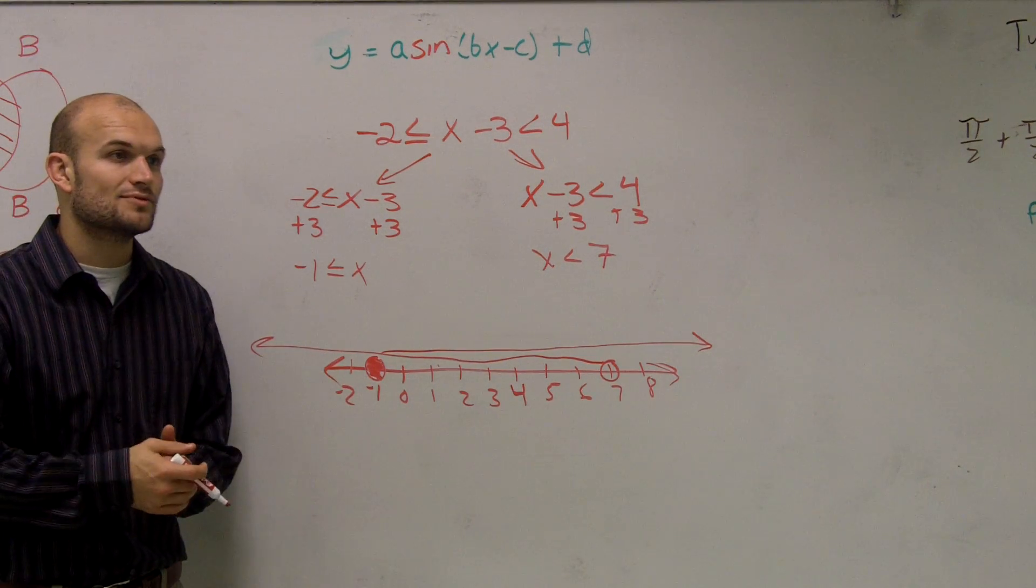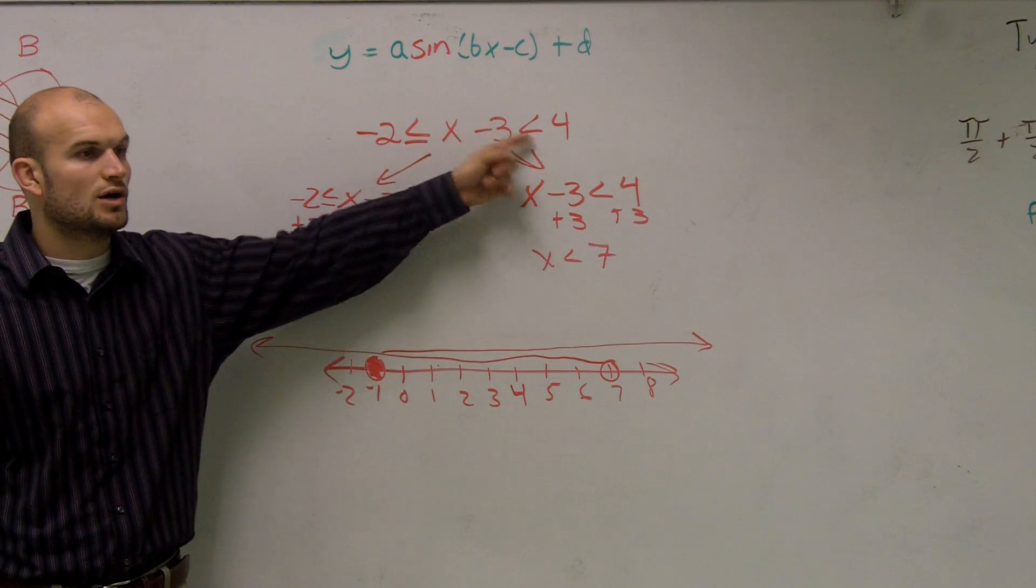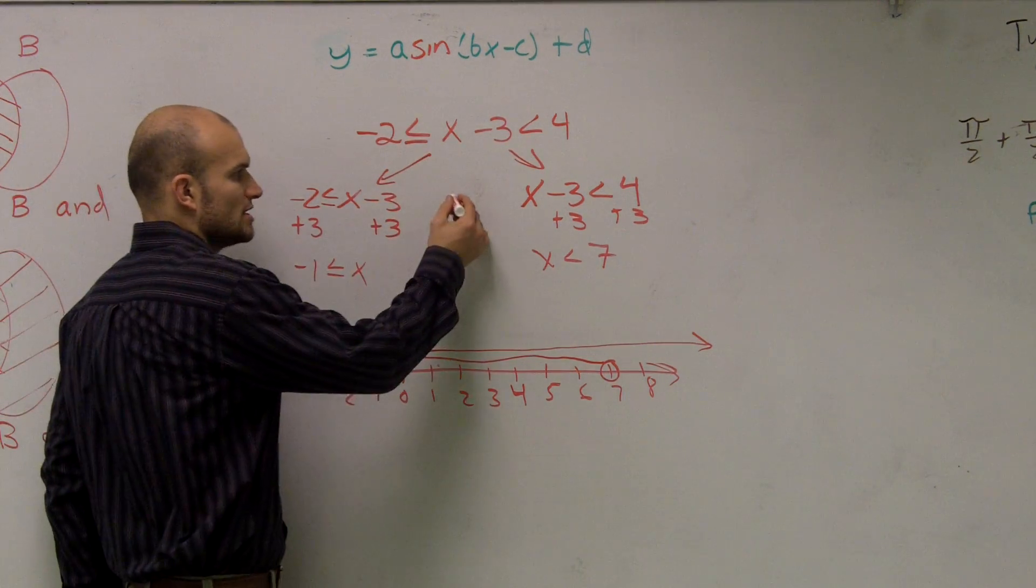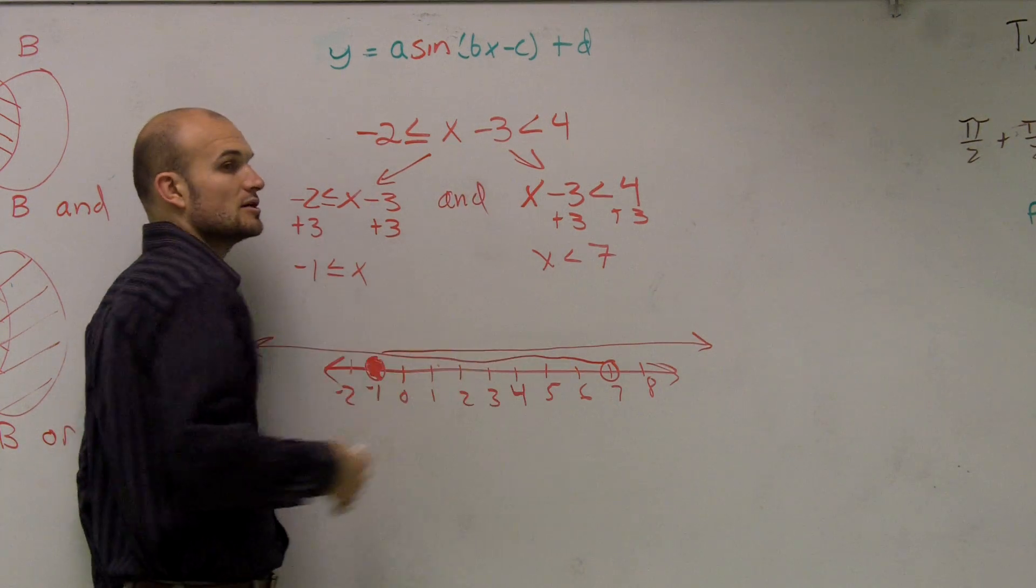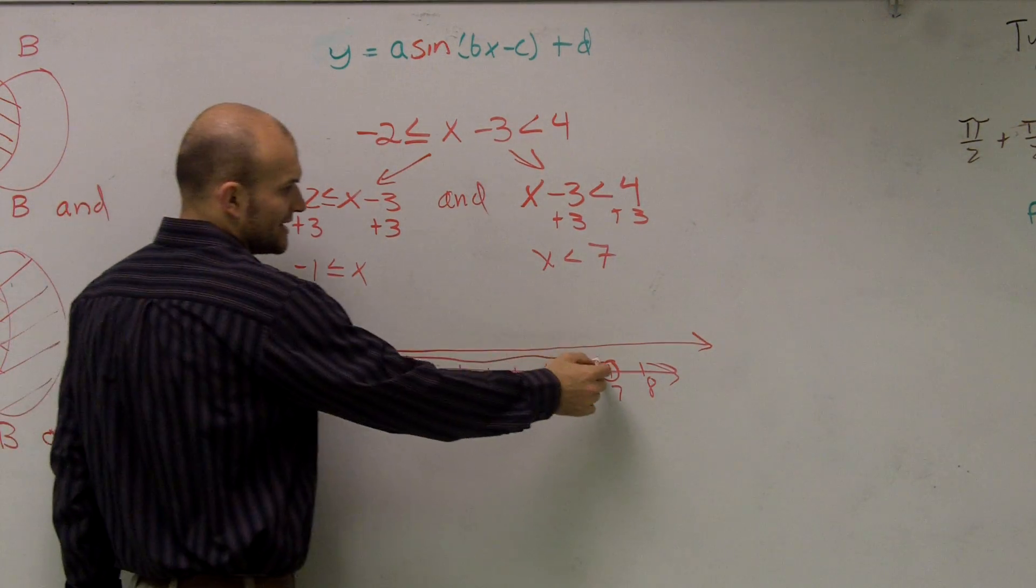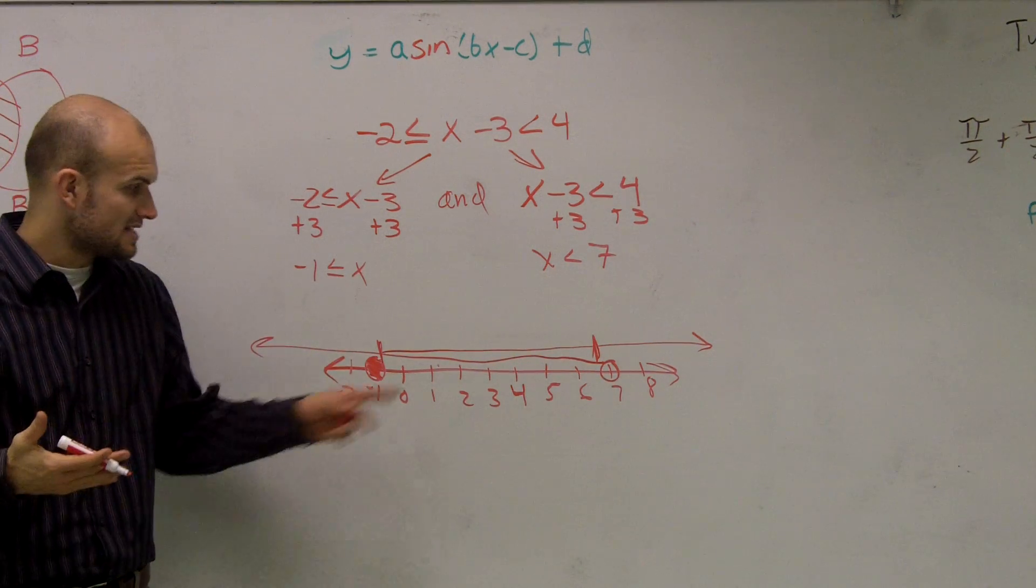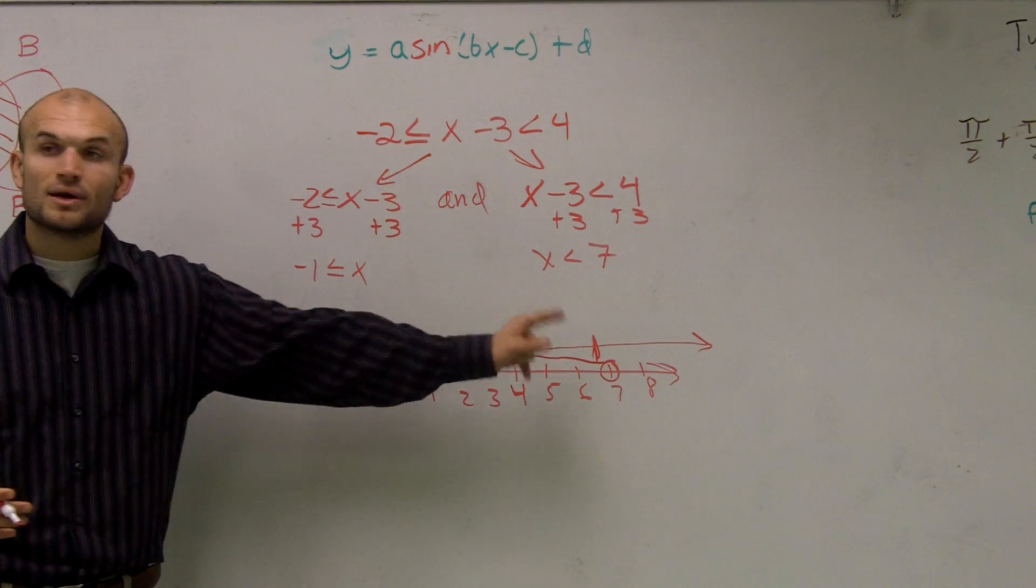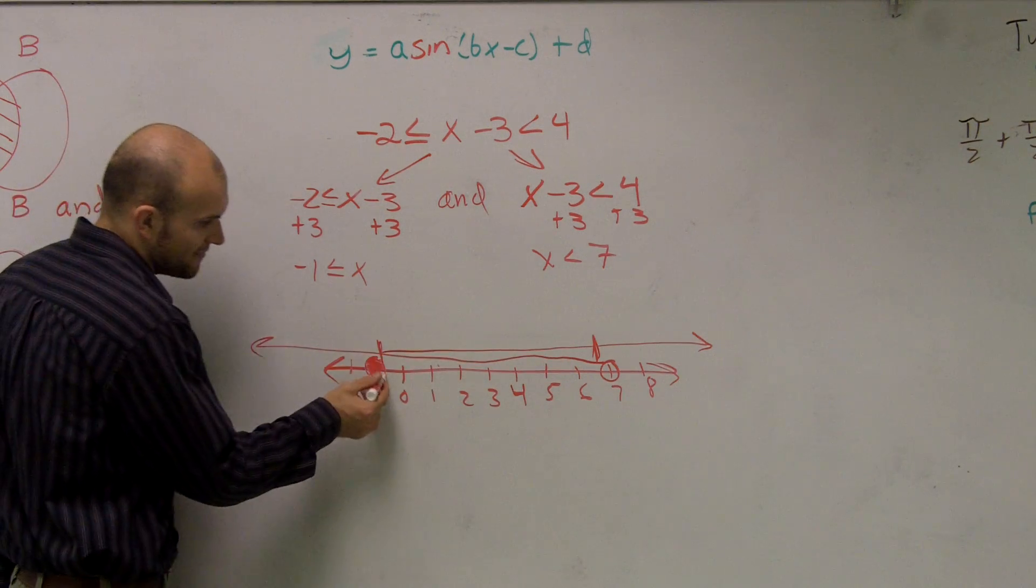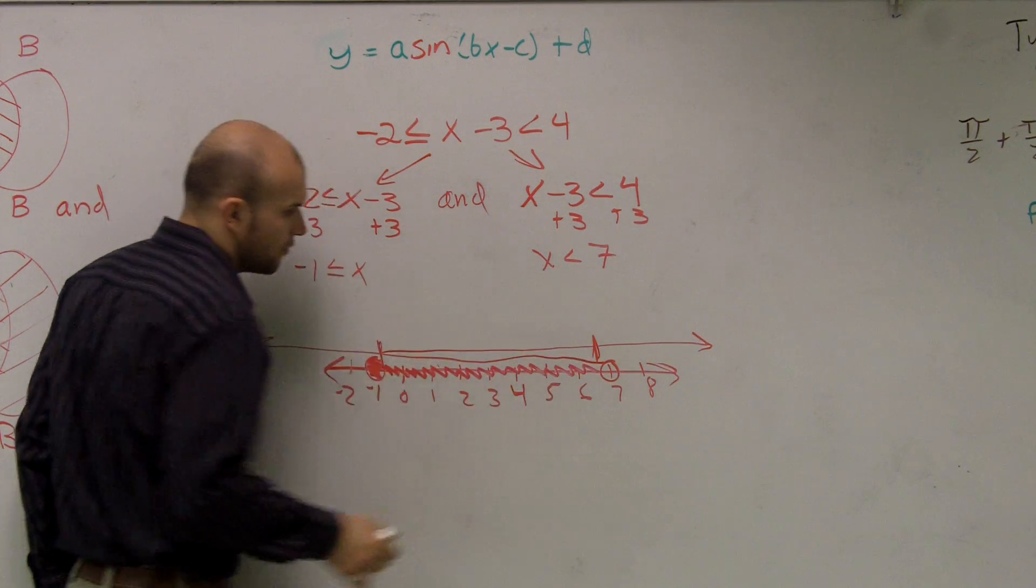So now, what you guys will notice is, and what I told you, is whenever you have your two inequalities in the same way, this is what we'll call an and statement. So since this is an and statement, we're only going to take where they intersect. So the only place for these two lines they both intersect is between negative one and seven. So my graph is going to be me shading between negative one and seven.